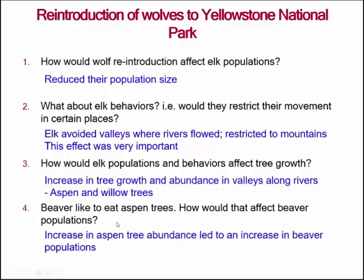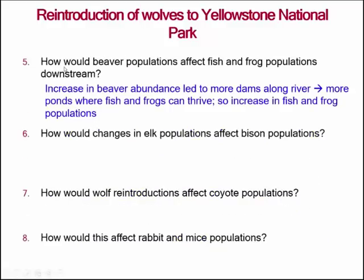This had a significant effect on beaver populations because beavers like to eat aspen as well. With the increase in beaver populations we saw more beaver dams along the rivers, which caused more pools, increasing the number of fish and amphibians and birds along those rivers — also affecting otter populations which like to feed on the fish in the pools. So the increase in beaver abundance led to more dams, causing more fish and frogs to thrive.